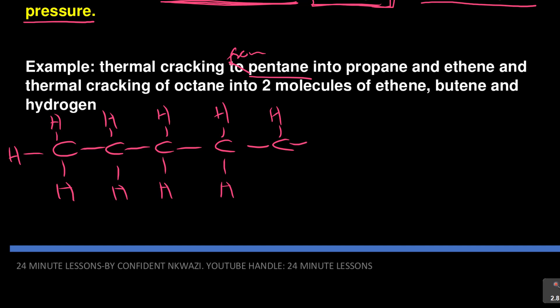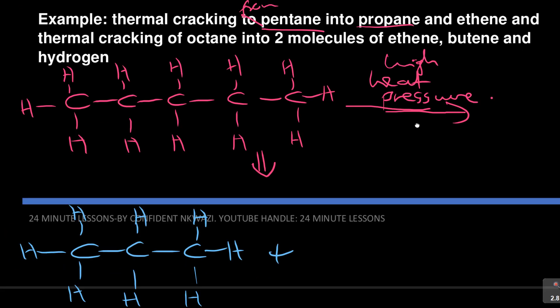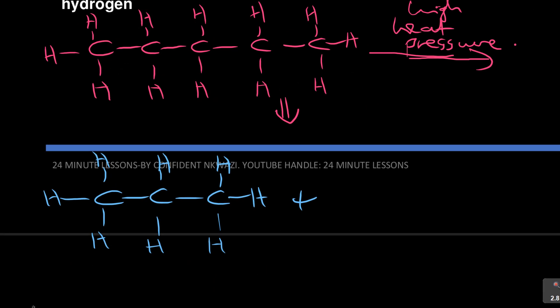You take the long chain pentane with high heat and high pressure. You're going to get propane. If you are going to get propane, you have to balance the equation. Propane is three carbons, plus ethene.